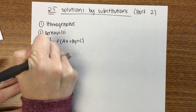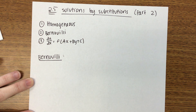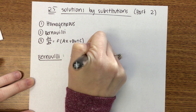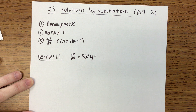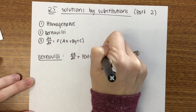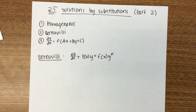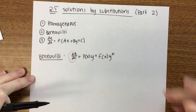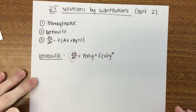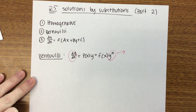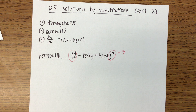A Bernoulli equation looks like the following: dy/dx plus p(x) times y equals f(x) times y to the n. The left side should look like a linear equation in standard form — you just have plain dy/dx with nothing in front of it. This y-to-the-n term is what makes it not linear. So this is like a linear equation; it just has that extra factor.